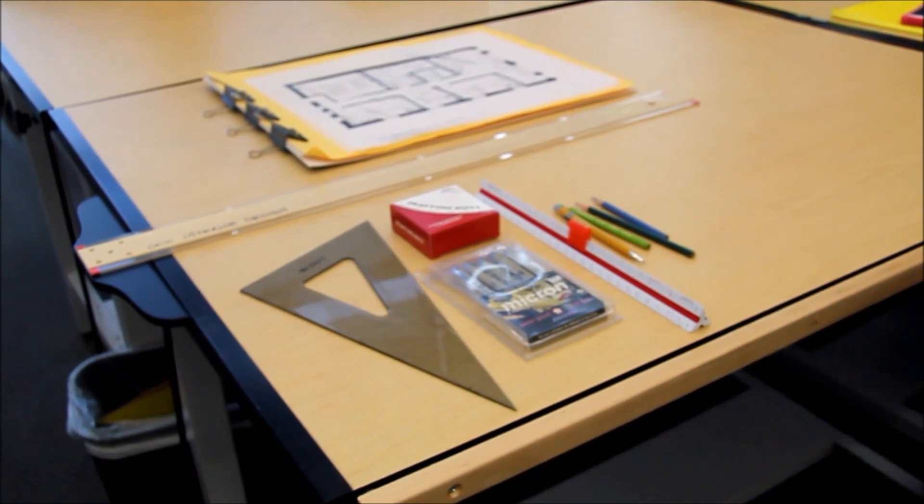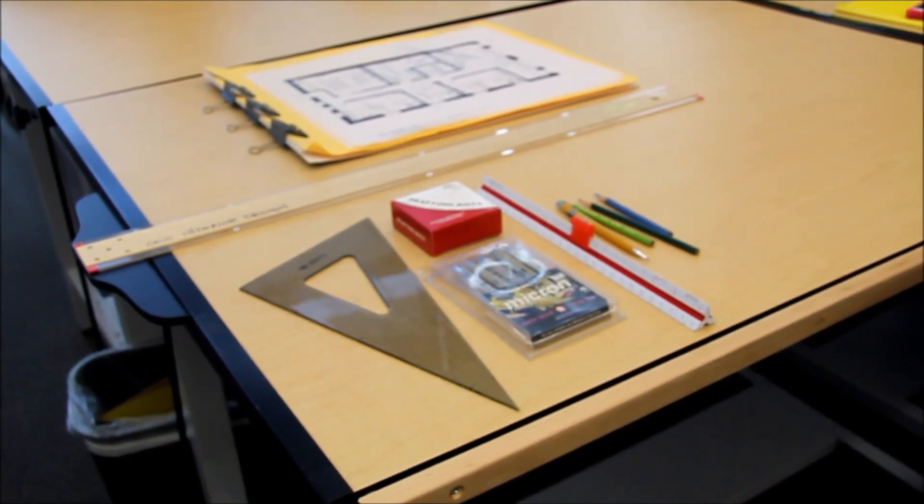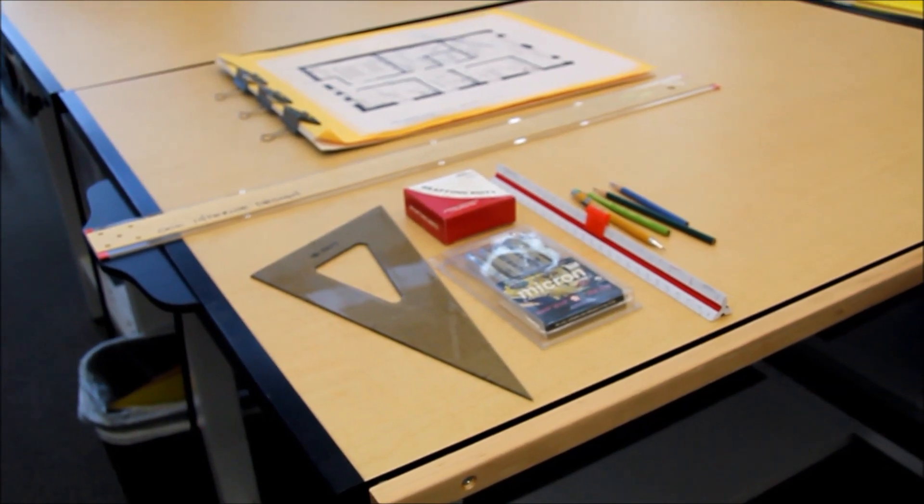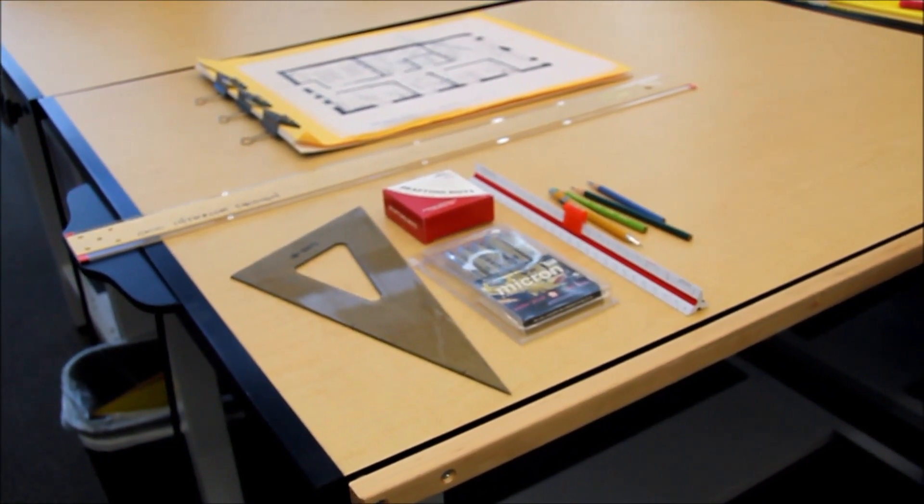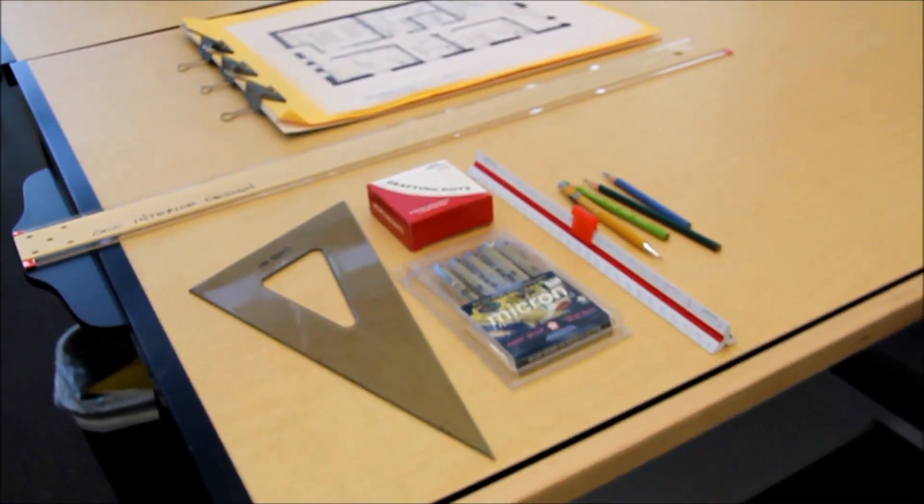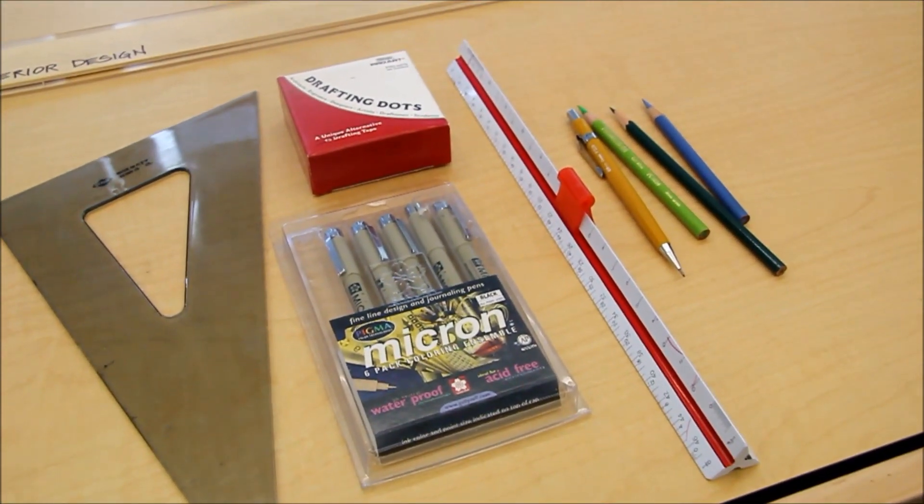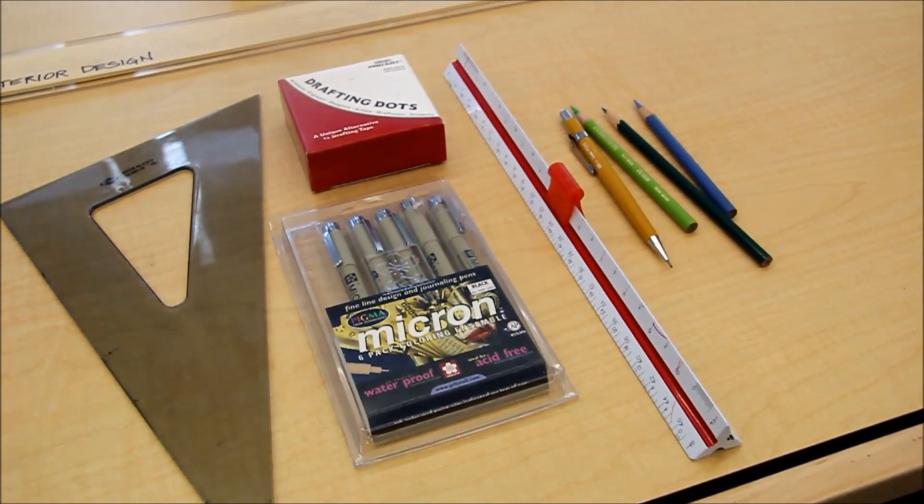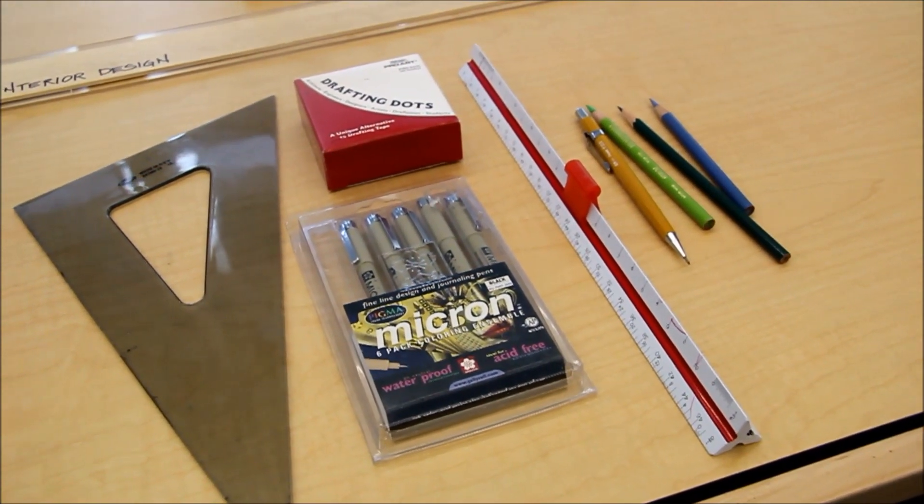For an axonometric drawing, first thing you need is a really good plan and your tools. You need a t-square, a 30-60 triangle, something to tape down your plan like drafting dots, some nice pens, a scale, and an assortment of colored pencils, which is a technique that I like to use.